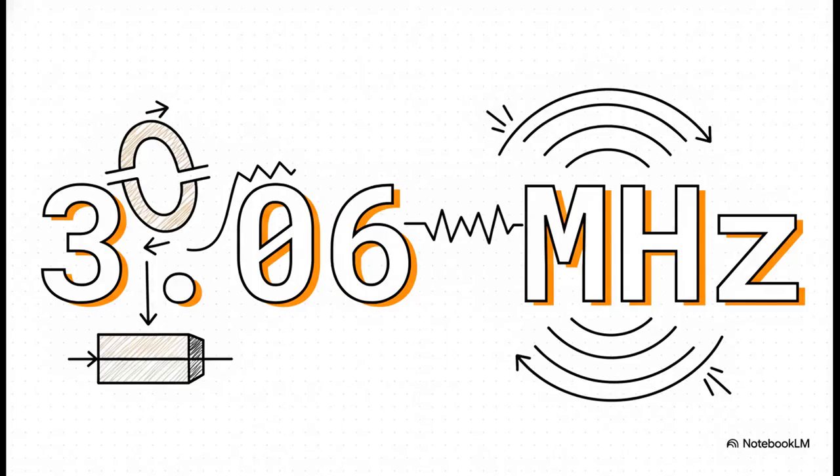Now, before we even flip the switch, we can do the math. There's a formula for this. And based on the specific parts we're using, the math says we should get a frequency of about 3.06 megahertz. So that's our target.